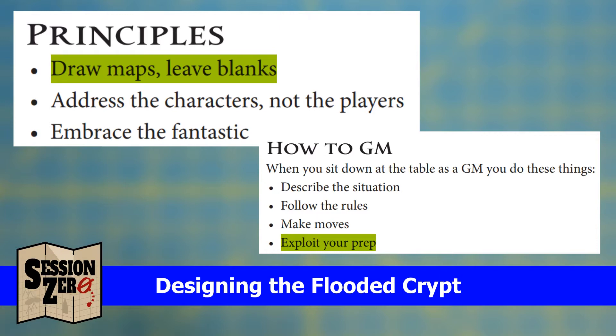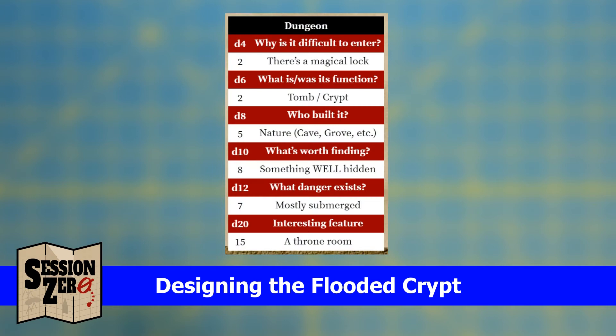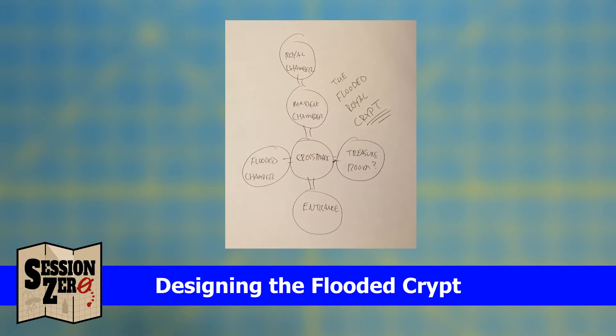So the first thing I want to do is review my context. I know two things from my dungeon roll: the crypt is a natural cave and it's mostly submerged. Now I can draw about as well as I did in the second grade, so I'm going to go online and find a map that fits that context.